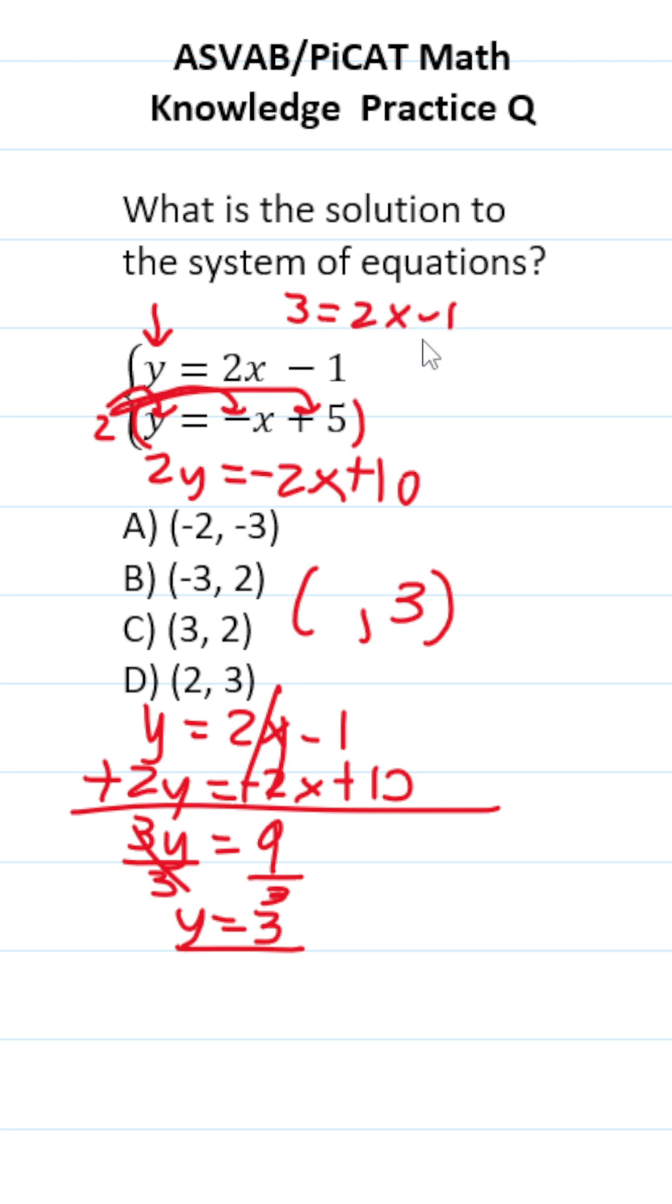To get x by itself, we're going to add 1 to both sides. This crosses out, leaving you with 2x over here. 3 plus 1 is 4. To get x by itself, divide both sides by 2. This crosses out, leaving you with x over here. 4 divided by 2 is 2. So we know our x value, which goes right here, is 2.